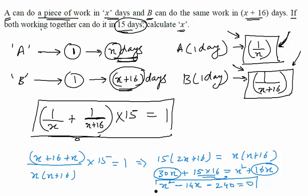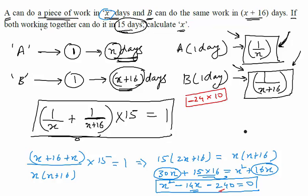Whatever is the solution of this equation should be the value of x. To solve this, we split the middle term. We split −14 such that the two numbers give a product of −240. One can easily see that the numbers are −24 and +10: their product is −240 and their sum is −14. Factorizing using these two numbers, we get (x+10)(x−24) = 0.